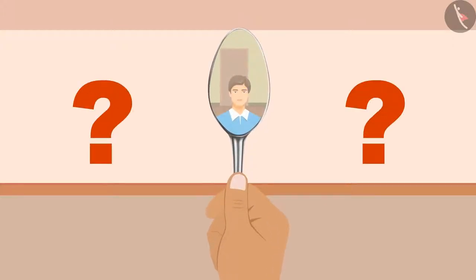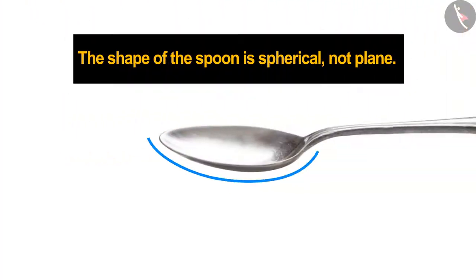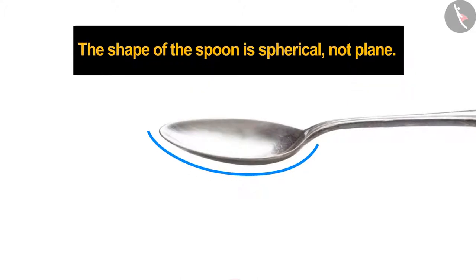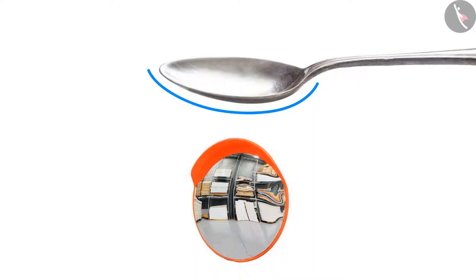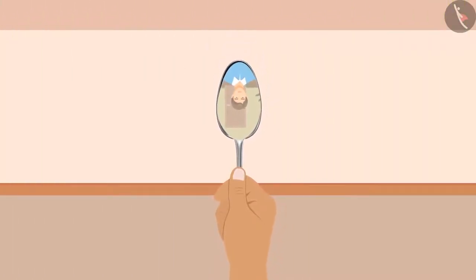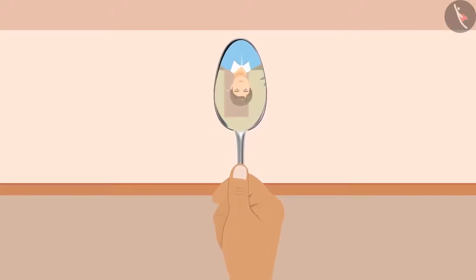Could you think why this would have happened to Rahul? The shape of the spoon is spherical, not plain. Those mirrors which have spherical reflecting surfaces like the spoon are called spherical mirrors. The small and inverted appearance of the image are two of the characteristics of the image formed by spherical mirrors.